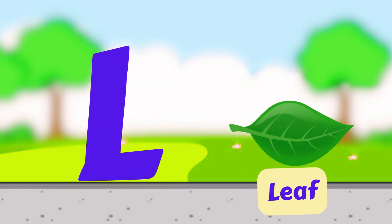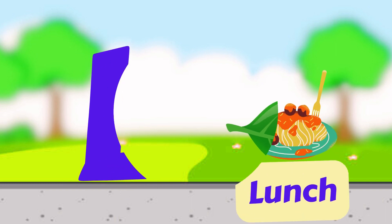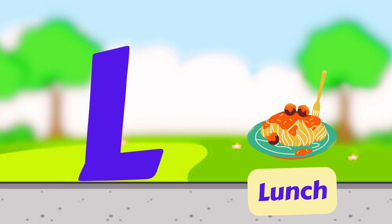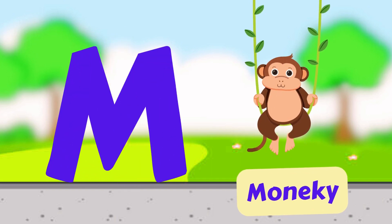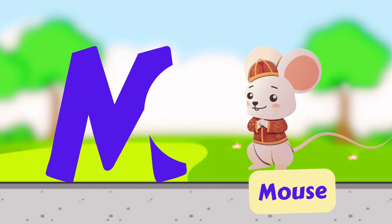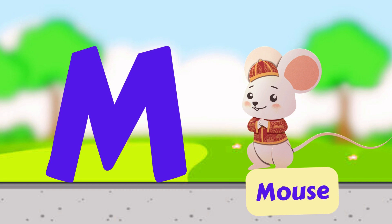L is for Leaf. L, L, Leaf. L is for Lunch. L, L, Lunch. M is for Monkey. M, M, Monkey. M is for Mouse. M, M, Mouse.